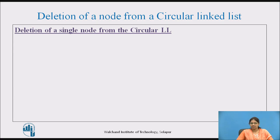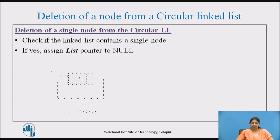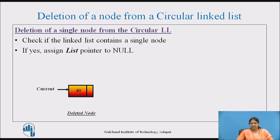Let's see a case where there is a single node in the circular linked list and we want to delete it. Check if the linked list contains a single node. If it does, assign the list pointer to null. For example, in a circular linked list with a single node, after deletion the list pointer points to null. Current points to the node to be deleted and list is assigned to null, automatically deleting the node.